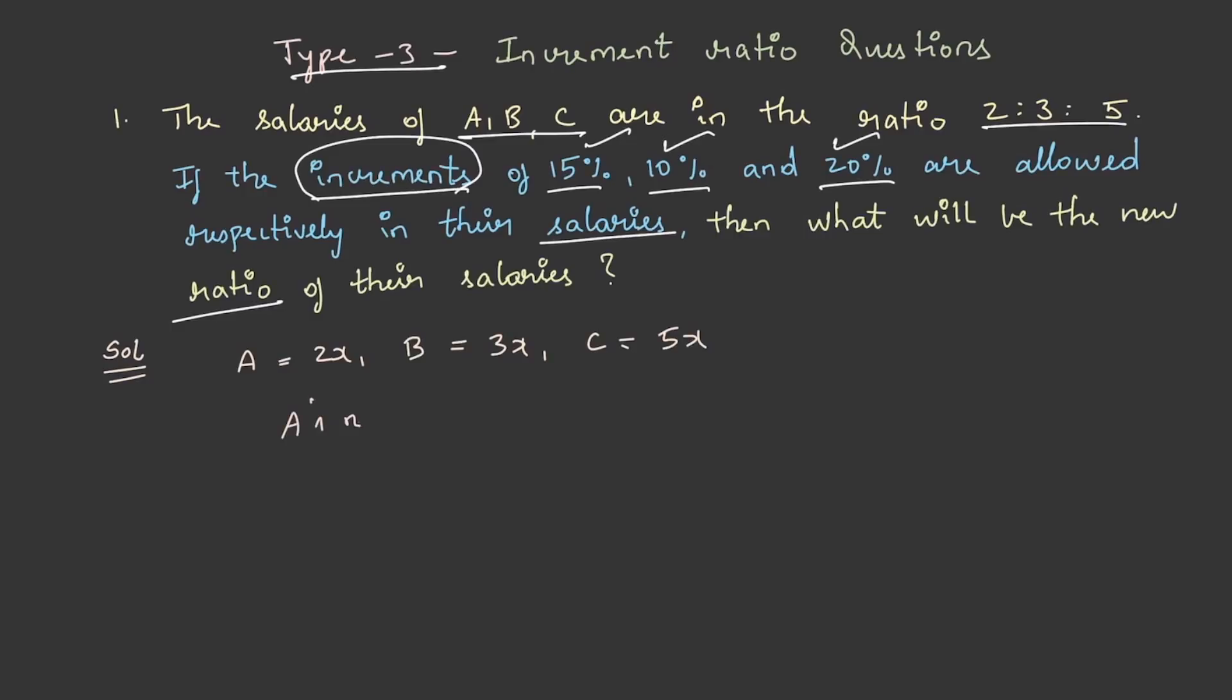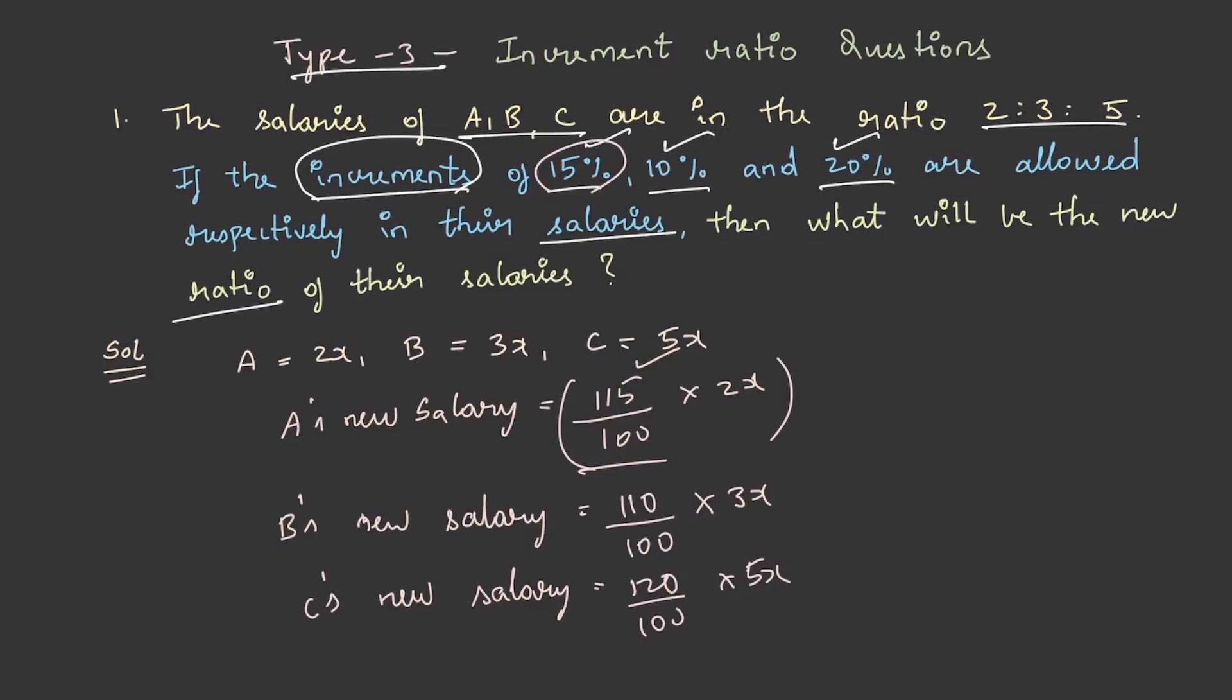So A's new salary will be 115 by 100 into 2x. This is because there has been an increase of 15 percent of his previous salary and in case of B it is 110 by 100 into 3x and for C 120 by 100 into 5x. So this on solving A's new salary will be 23 by 10x and that of B's will be 33 by 10x and that of C's will be 6x.